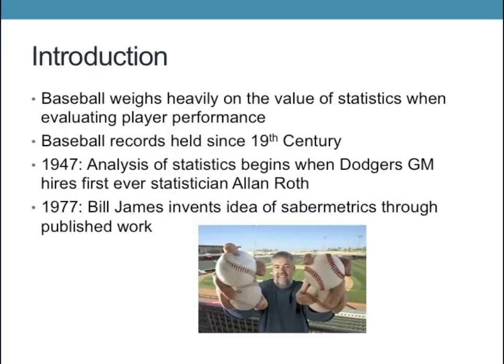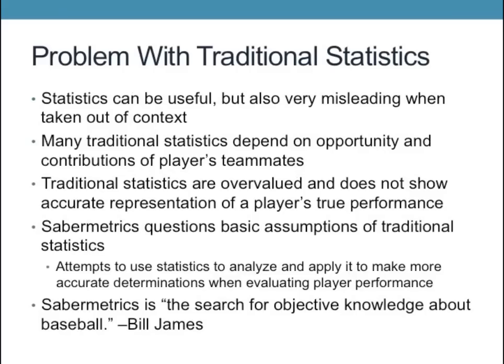It wasn't until 1947 when the analysis of baseball statistics began, when Brooklyn Dodgers GM Branch Rickey hired the first ever baseball statistician named Alan Roth. This led the way to the growth of a whole new dimension of baseball analysis, in which a man named Bill James created through published work in 1977, called sabermetrics. Now why would Bill James spend so much time on this idea of sabermetrics, when statistics are supposed to tell the true nature of a player?